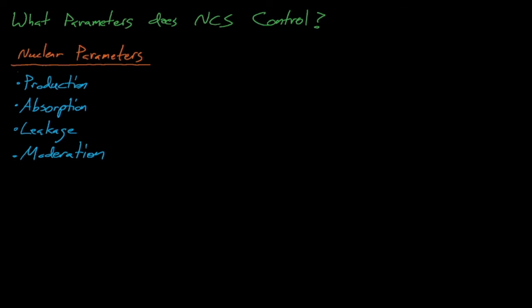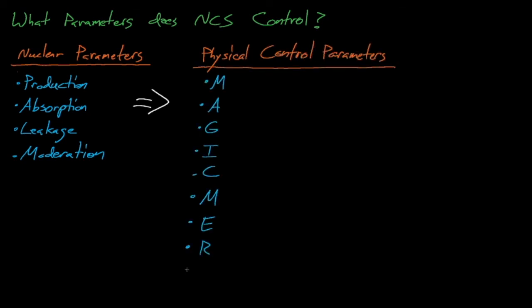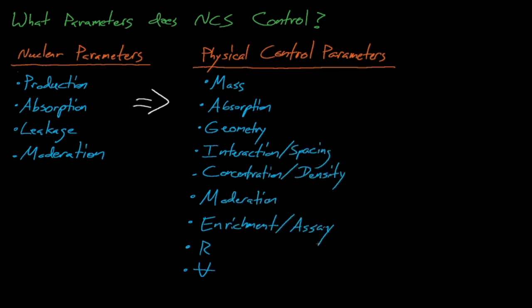But more specifically, when designing a criticality safety plan, we must control for the MAGIC-MIRV physical parameters, where the terms in this MAGIC-MIRV acronym include mass, absorption, geometry, interaction, composition or density, moderation, enrichment or assay, reflection, and volume. We'll discuss exactly what these controls entail in the following lecture.